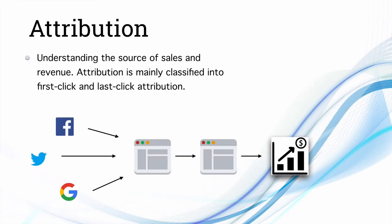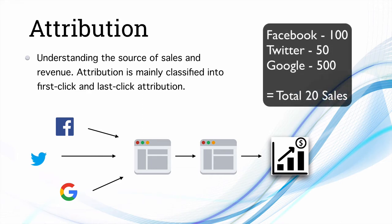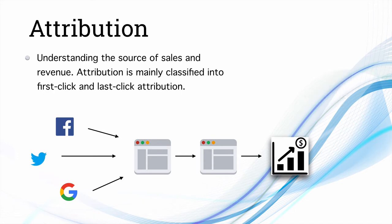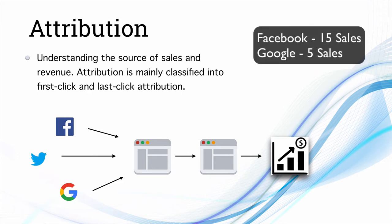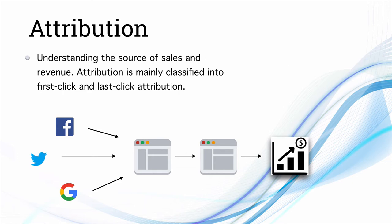The next one is attribution. Attribution is mostly used to understand the source of sales and revenue inside a funnel, and is mainly classified into first click and last click attribution. You will have a separate chapter about it. For example, if 100 visitors come from Facebook, 50 from Twitter, and 500 from Google, and you have 20 sales, you need to find out which source those sales came from.